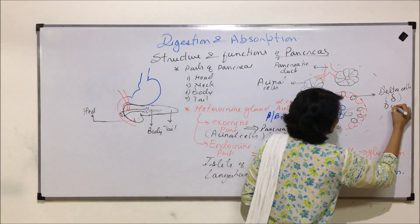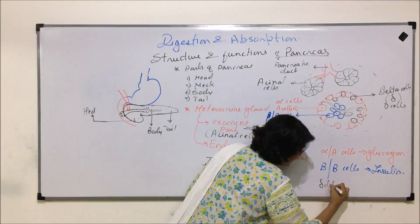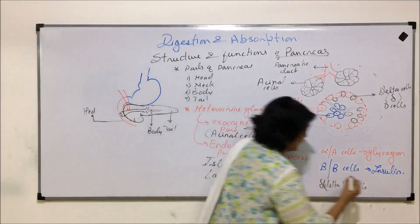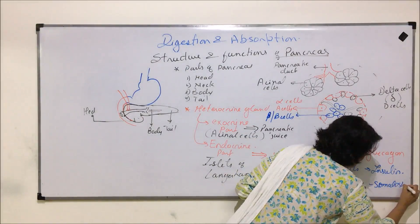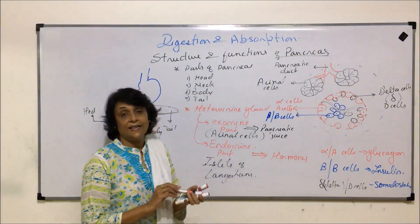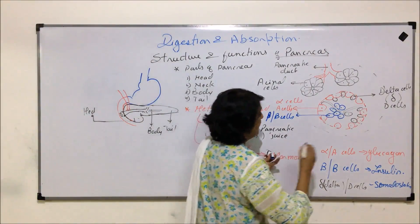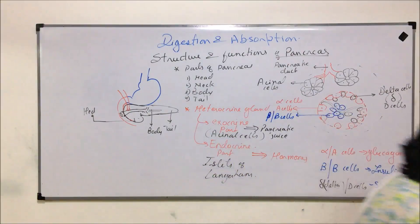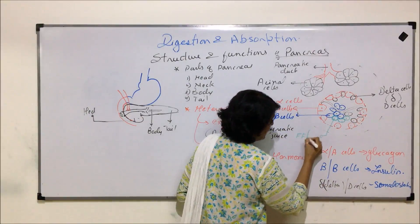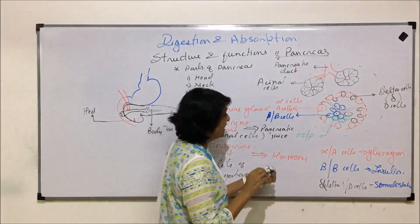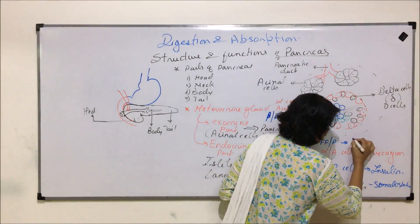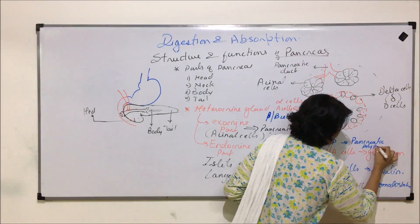Delta cells, or D cells, produce somatostatin. Somatostatin is inhibitory — it controls the secretion from alpha and beta cells. The fourth category of cells, present throughout, are called FF cells or P cells, and they secrete pancreatic polypeptides.